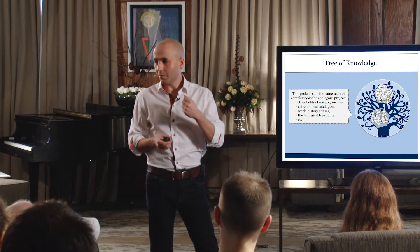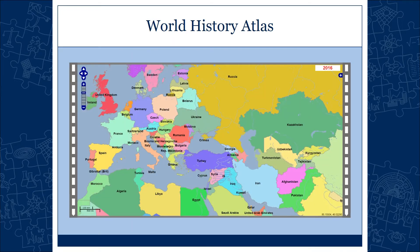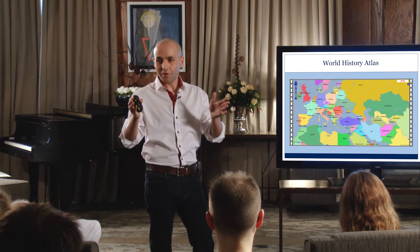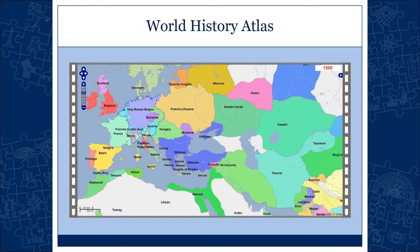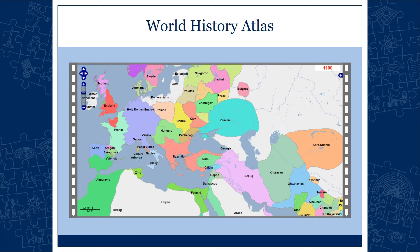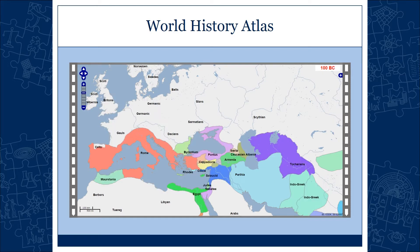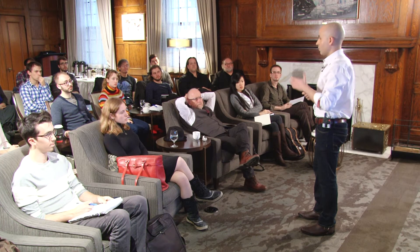This is a task that can never be fully completed — we understand that — but one has to start somewhere. For example, there is already a world history atlas website where you can choose any year and get a political map of a region with very good precision — all the way back to 3000 BC. There is also a tree of life website with a comprehensive tree of all organisms believed to have ever existed, extremely complex and detailed. So you have the tree of life, and you can have a tree of knowledge.